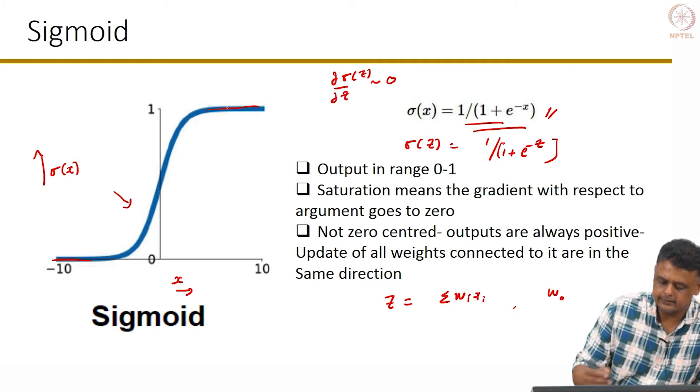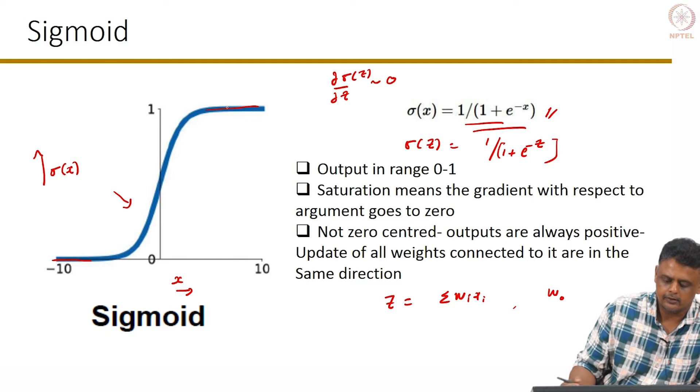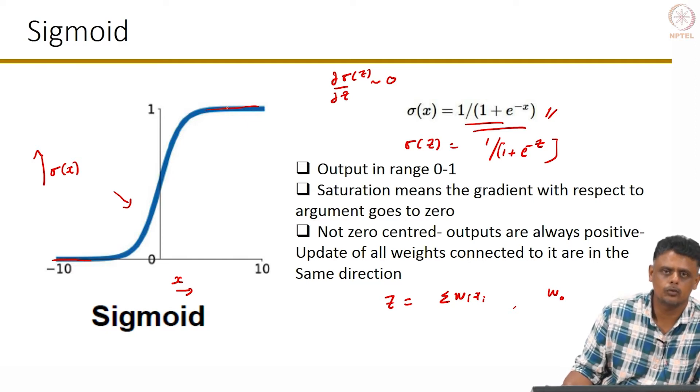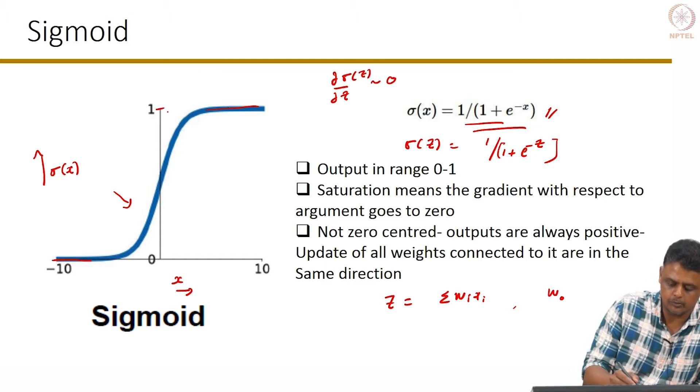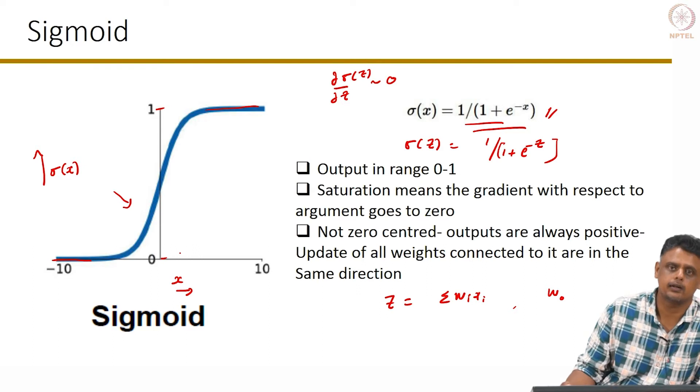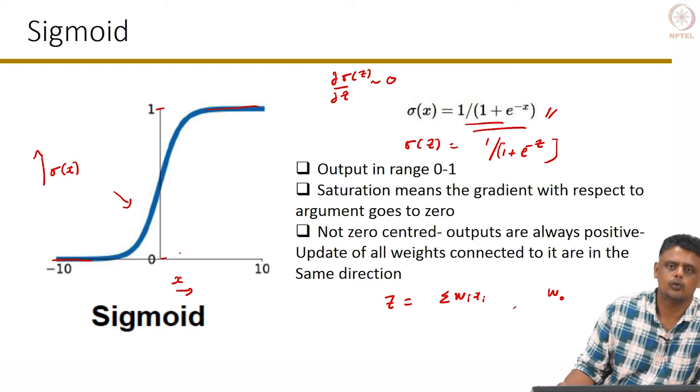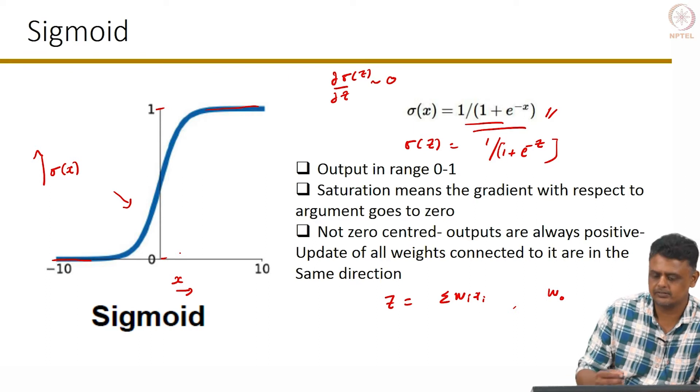This has many other advantages. One of them is that suppose your output layer you want to interpret it as a probability score, then this would be the optimal thing to use because the outputs are between the value 0 and 1. This is also known as the squashing function because it squashes your output in the range 0 to 1. The next function that you are going to look at is the tan hyperbolic, which has very similar features except for the range of the output.